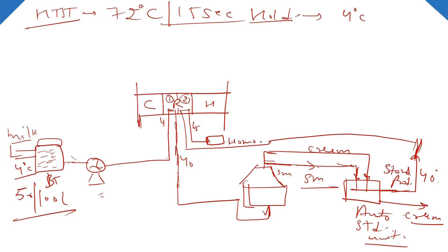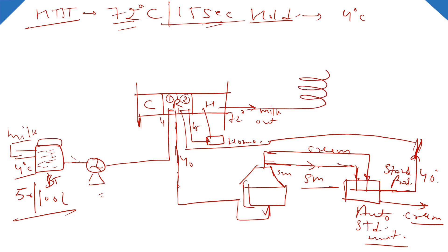After homogenization, milk goes to the heating section. In the heating section, milk enters at around 66-67°C and is heated up to the pasteurization temperature — 72°C. After the heating section, the next step is holding: milk must be held for 15 seconds. Holding occurs in holding tubes. After the heating section, milk goes into the holding tubes.